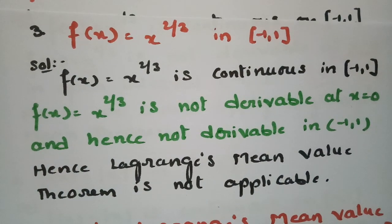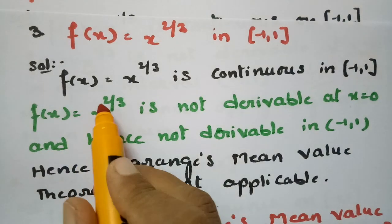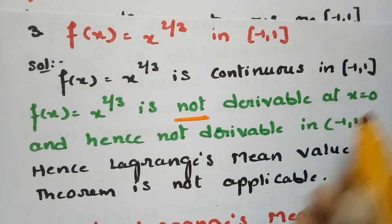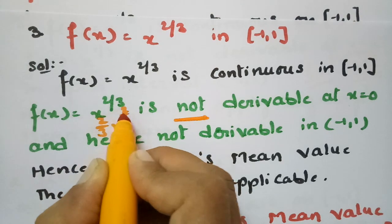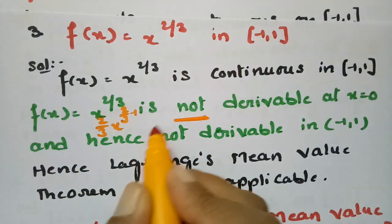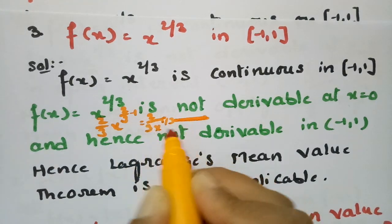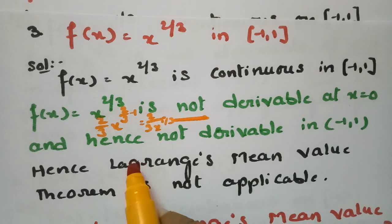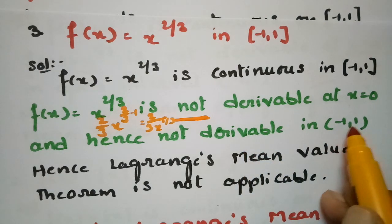The third problem: f(x) = x^(2/3) in closed [-1, 1]. f(x) = x^(2/3) is continuous on [-1, 1], but it is not derivable at x = 0. Using the power rule: (2/3)·x^(2/3 - 1) = (2/3)·x^(-1/3). At x = 0, this becomes 1/0, which is infinity. Hence the derivative does not exist at x = 0, so f(x) is not derivable in the open interval (-1, 1). Hence Lagrange's mean value theorem is not applicable.